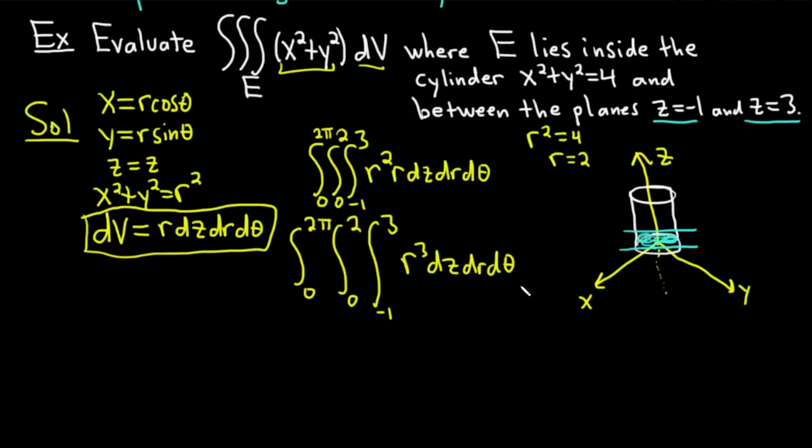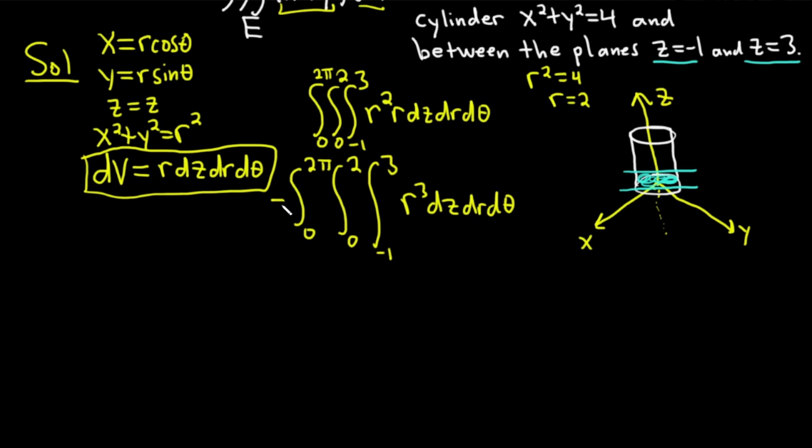Okay, so first we have to integrate with respect to z. So I'm just going to come over here to give myself some more room. Actually, I just lost room by doing that, so I'll stay here. So we're going from 0 to 2 pi, and then we're going from 0 to 2. And we're integrating with respect to z. So r cubed is basically a constant, so we're just going to get r cubed times z. So we have r cubed times z, and then z is going from negative 1 to 3.